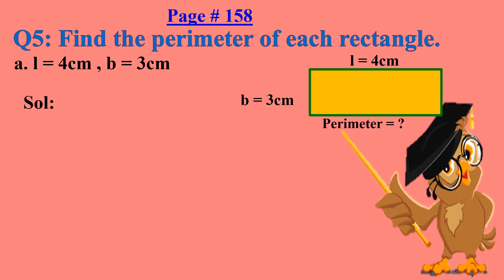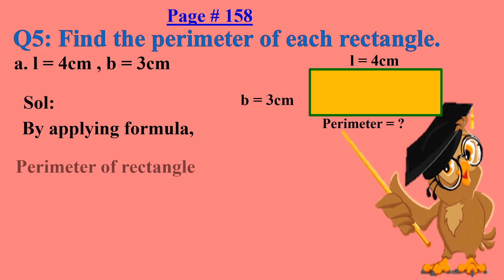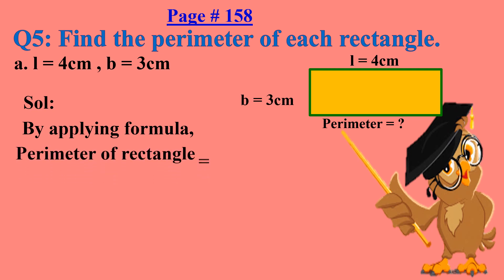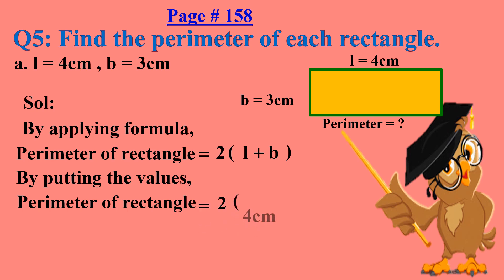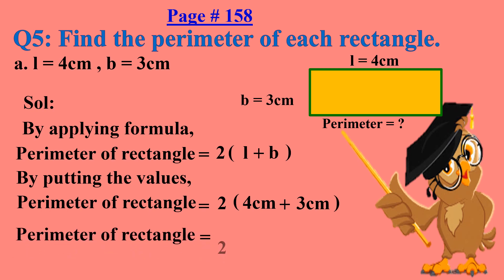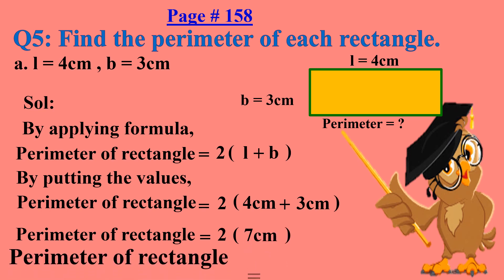Perimeter is the outer boundary of the shape. We apply the formula: perimeter of a rectangle equals 2 into (length plus breadth). Putting in the values: perimeter equals 2 into (4 cm plus 3 cm). We solve the bracket first: 4 plus 3 equals 7 centimeters. Then 2 into 7 equals 14 centimeters. That is our answer.